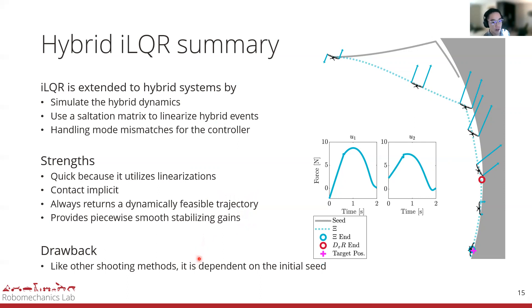The drawback from this algorithm is that when you encode the hybrid dynamic constraints through simulation on the forward pass, it becomes very dependent on its initial seed. It may not know to add contact if there is no gradient information. However, this is similar to other shooting methods where they are also dependent on the initial seed. Thank you for listening to my talk.